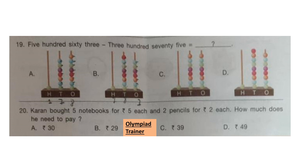Question 20: Karan bought 5 notebooks for Rs. 5 each and 2 pencils for Rs. 2 each. How much does he need to pay? 5 notebooks at Rs. 5 each: 5 × 5 = 25. 2 pencils at Rs. 2 each: 2 × 2 = 4. So 25 + 4 = 29. Option B is the answer: Rs. 29.